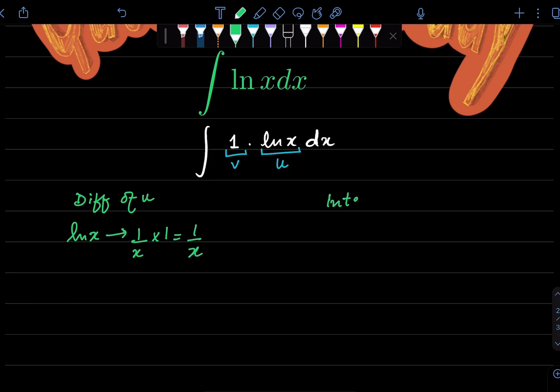And we will also need integration of v. The integral of 1 would be x. Now the formula for a product rule is u integral of v minus integration sign. And there's a square bracket which contains a product of differentiation of u and integral of v.